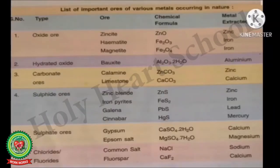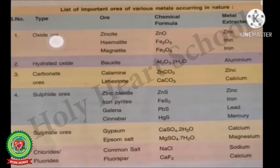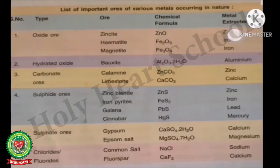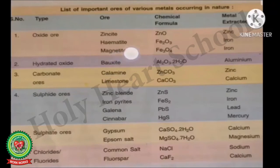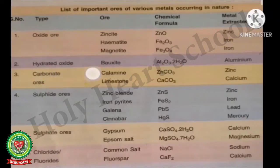Now we will discuss important ores of various metals occurring in nature. Oxide ores: Zincite has chemical formula ZnO and zinc metal is extracted from it. Hematite has chemical formula Fe2O3 and iron metal is extracted from it. Magnetite has formula Fe3O4 and iron is extracted from it. Hydrated oxide ore: Bauxite has chemical formula Al2O3·2H2O and aluminium metal is extracted from bauxite.